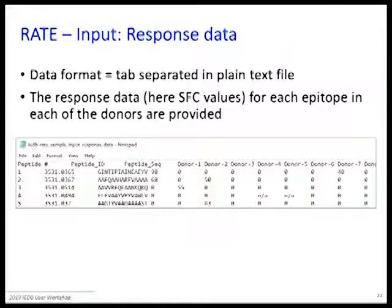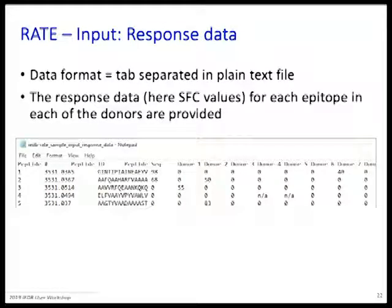The test is treated as binary — is it positive or negative. You can enter the data, and in this case it's ELISpot data. So that you don't have to re-enter each time, you can actually change your threshold of what you consider positive or negative, but the tool treats it as binary.